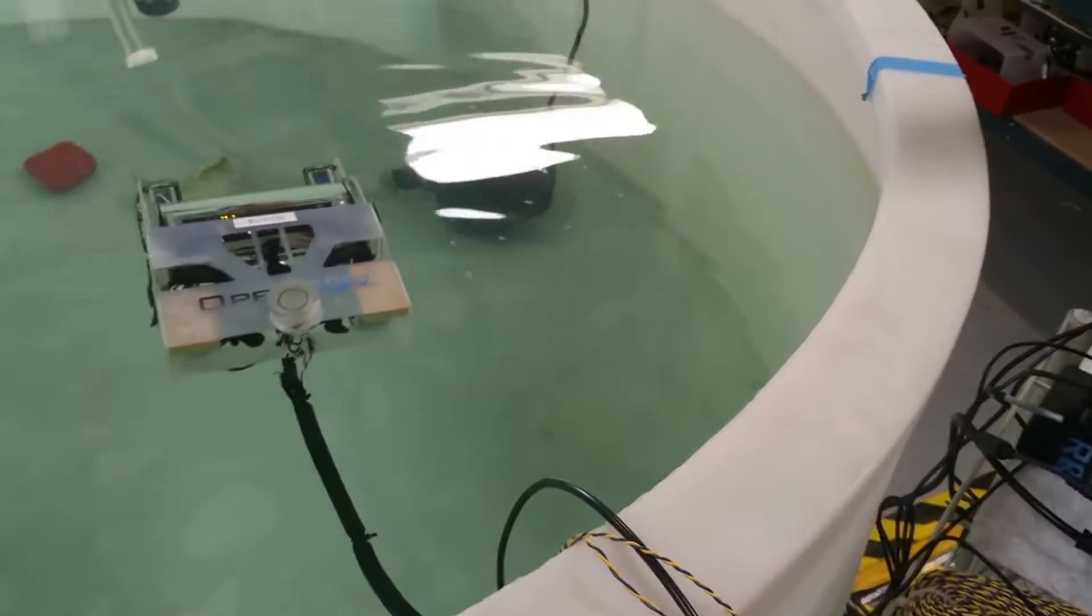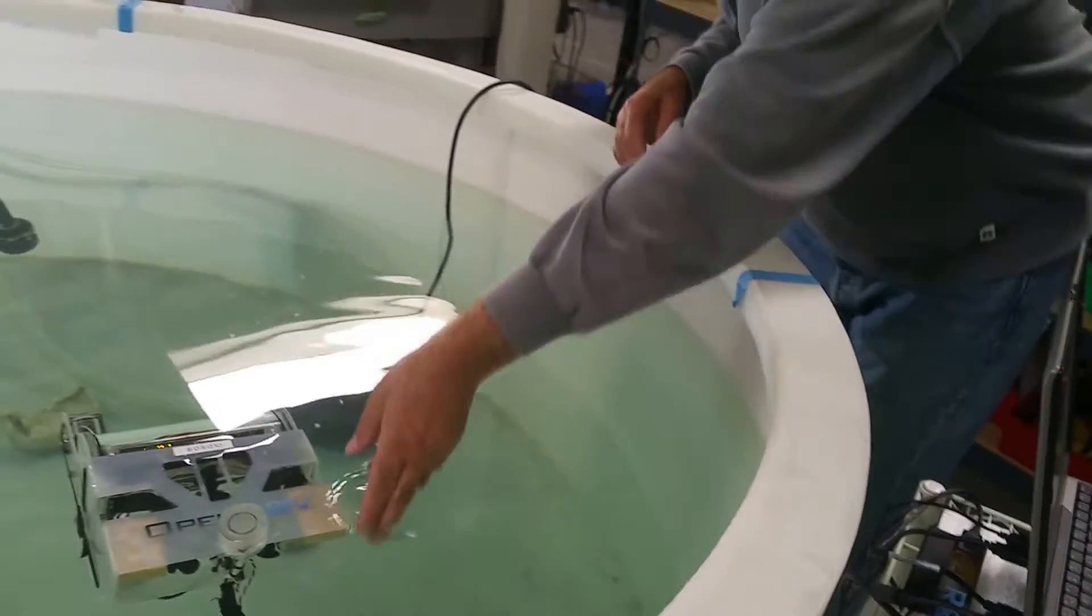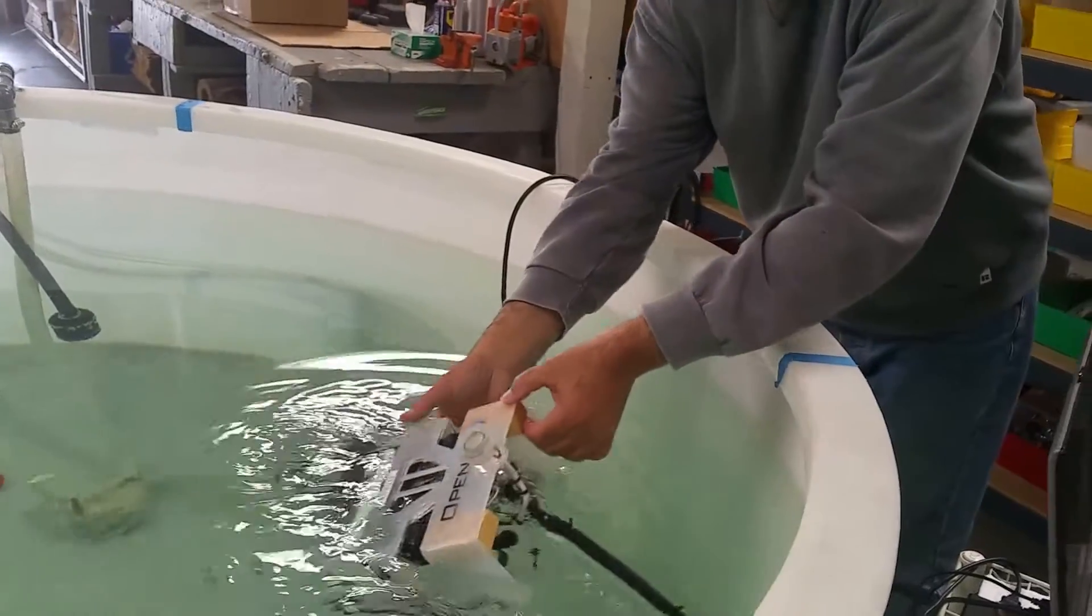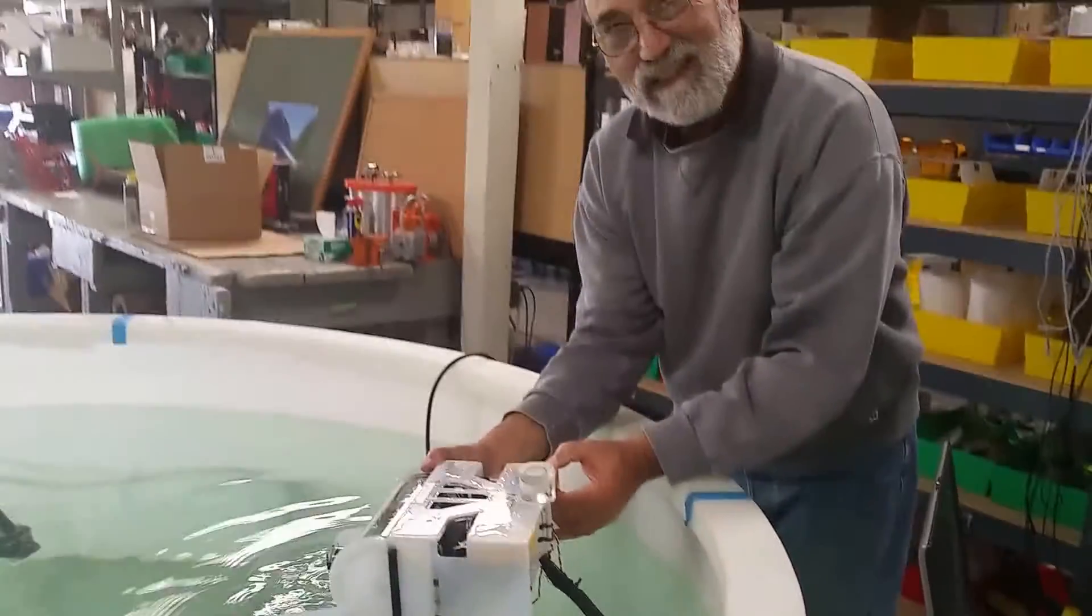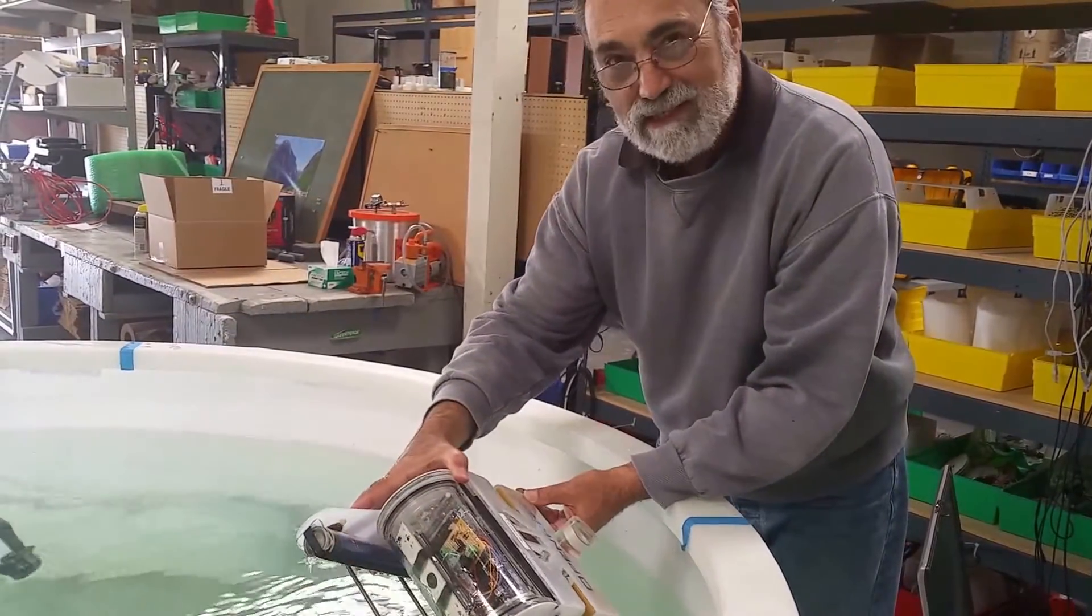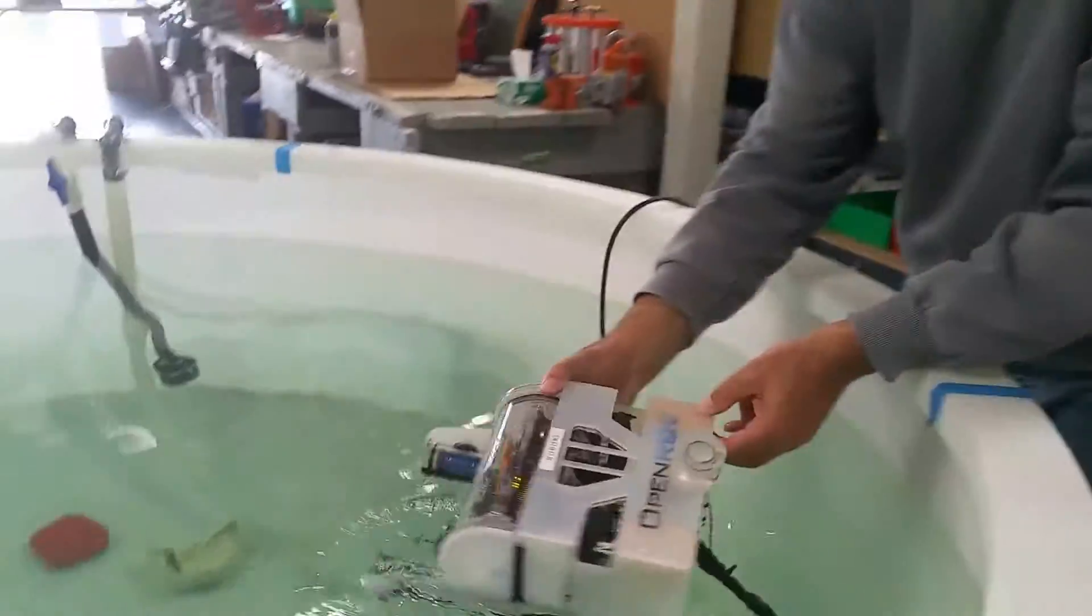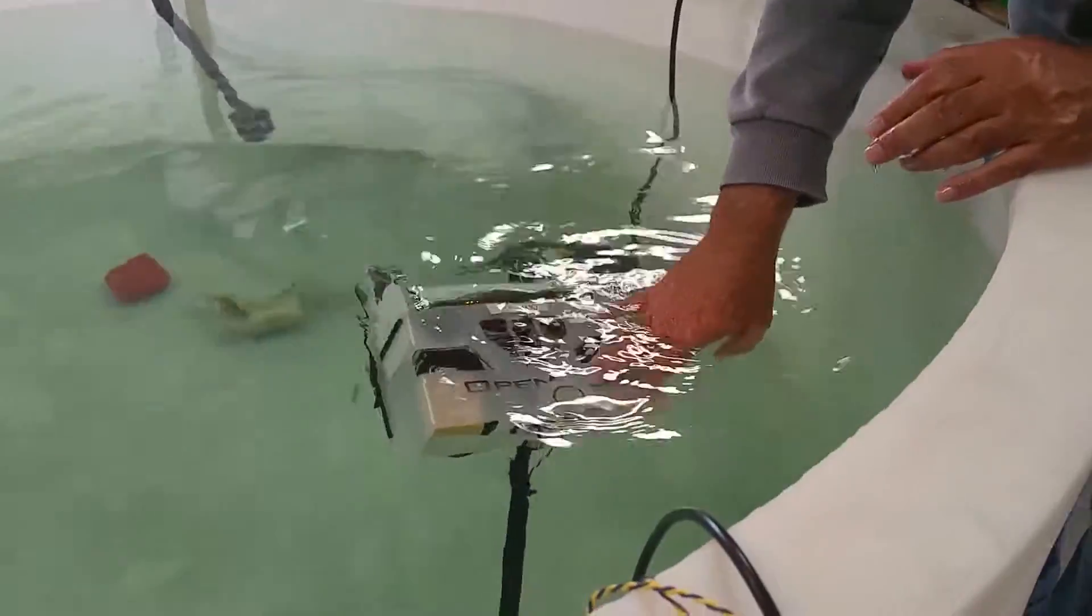That signal is being picked up by the transducer on the open ROV, going to the amplifier that's inside the E-chassis, and back out to the second cable to the input of the oscilloscope. You can see that signal.